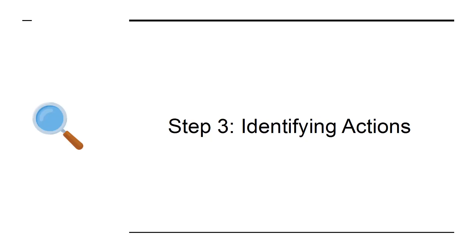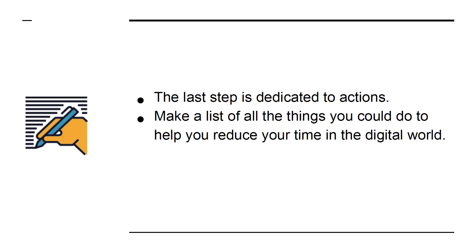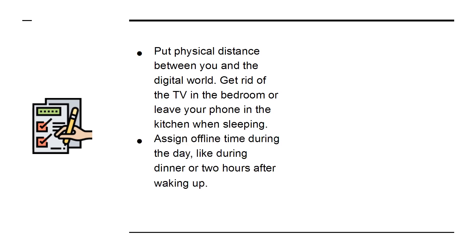Step 3: Identifying Actions. The last step is dedicated to actions. Make a list of all the things you could do to help you reduce your time in the digital world. Here are a few examples. Put physical distance between you and the digital world — get rid of the TV in the bedroom, or leave your phone in the kitchen when sleeping.